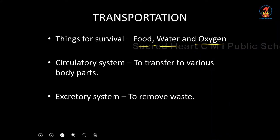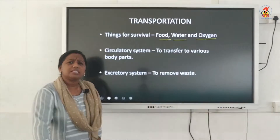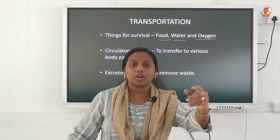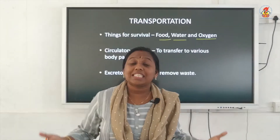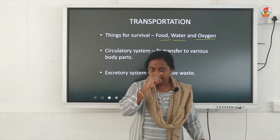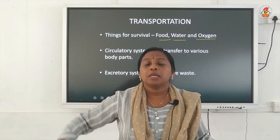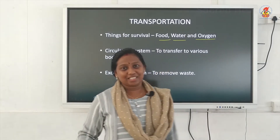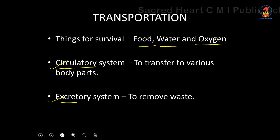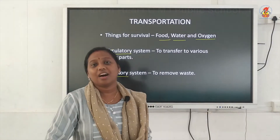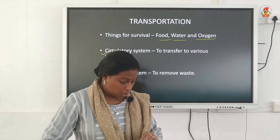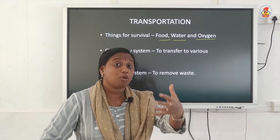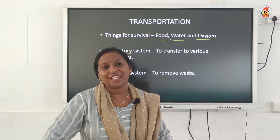The major transportation systems in our body are the circulatory system and the excretory system. The circulatory system transports all the required materials — food, water, oxygen — to each and every cell in your body. The cell will produce energy using these materials. After energy production, waste is produced within the cell. This waste has to be removed by another transportation system called the excretory system. So both the circulatory system and excretory system help in the transportation of materials within our body. Today we will be studying in detail about the circulatory fluid, which is a part of your circulatory system.